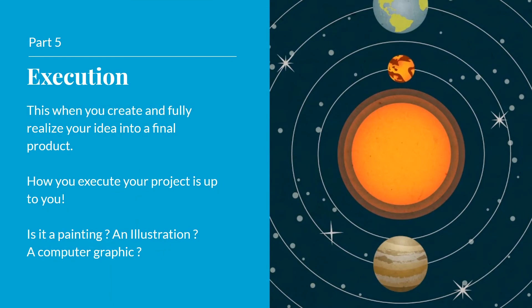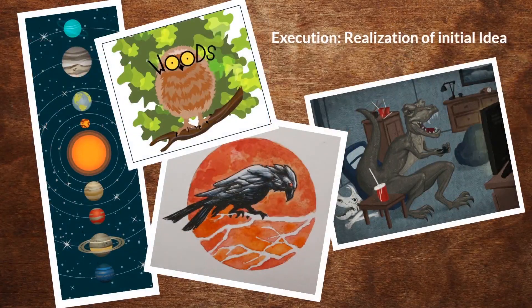Part 5: Execution. This is when you create and fully realize your idea into a final product. How you execute your project is up to you — is it a painting, an illustration, a computer graphic? You decide based on the materials you're going to use. Here are a couple of examples of finished work.